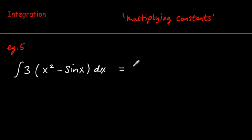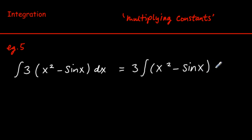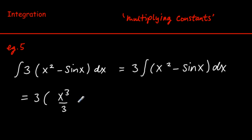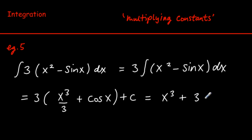Example 5: when we multiply by a constant, we don't integrate the constant at all — we move it outside the integral. In this case, 3 goes outside. We then integrate x² minus sin x: for x², raise the power by 1 and divide by the new power; minus sin x goes to minus cos x, and minus minus is plus. Adding the constant of integration and multiplying in the 3, this neatens up to x³ + 3 cos x + C.